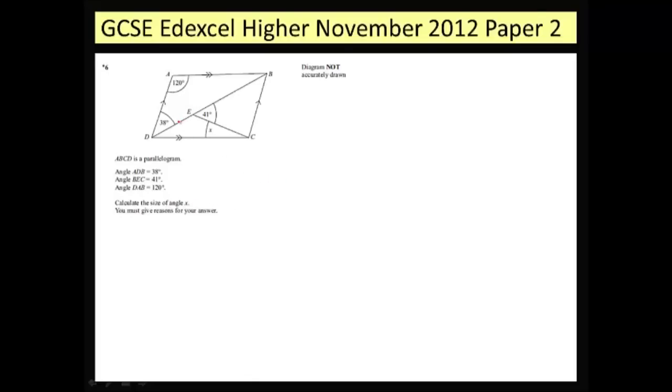The first thing I can see is that this angle here is going to be 180 minus 41. The reason for this is because the angle is on a straight line and that missing angle there is 139 degrees. What I'm actually going to do just underneath it is write angles on a line equal 180. So what I'm doing at each step of the way is I'm giving reasons for my answer.